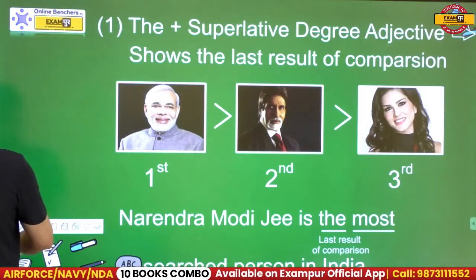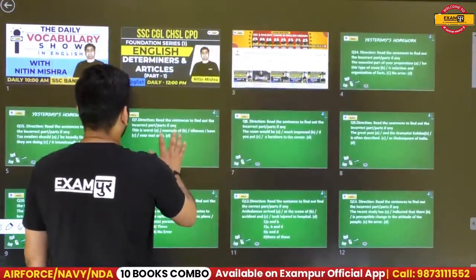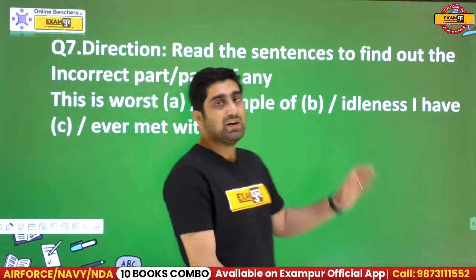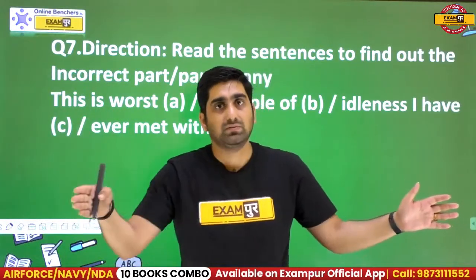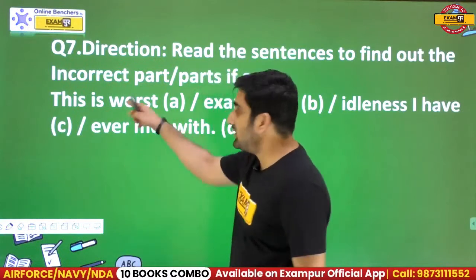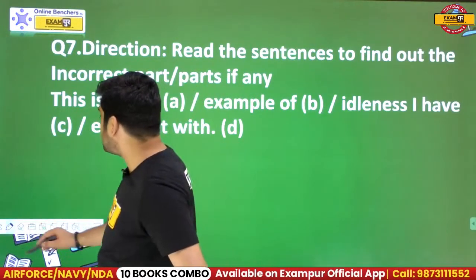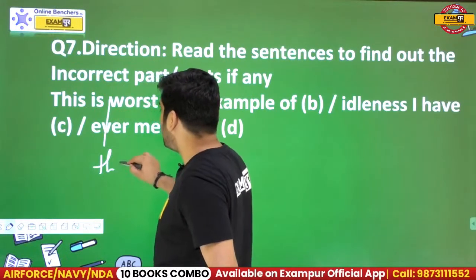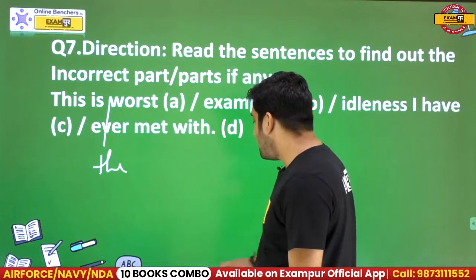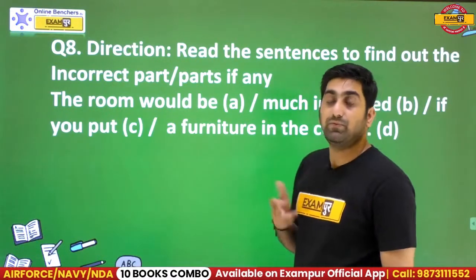Moving on to question 7 again: 'This is the worst example of idealness that I have ever met.' I have met several examples of idealness, compared all of them, and after comparing, as the last result, I found this is the worst. After using article 'the,' we can complete the sense of comparing and giving it the last result of comparison. I hope you got the logic of using article 'the' before the superlative degree.